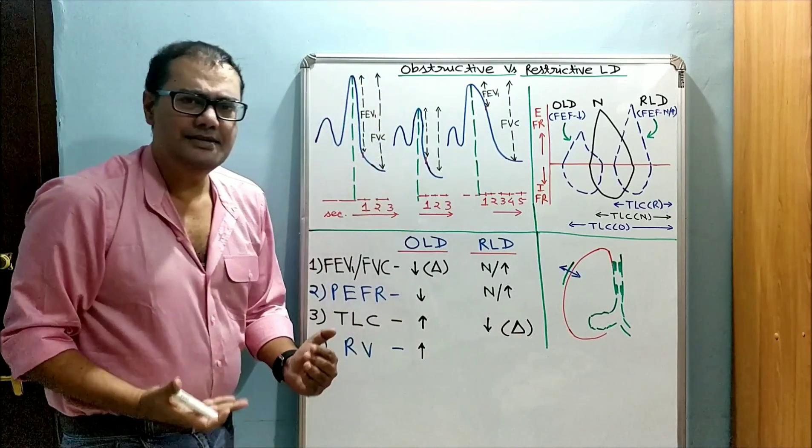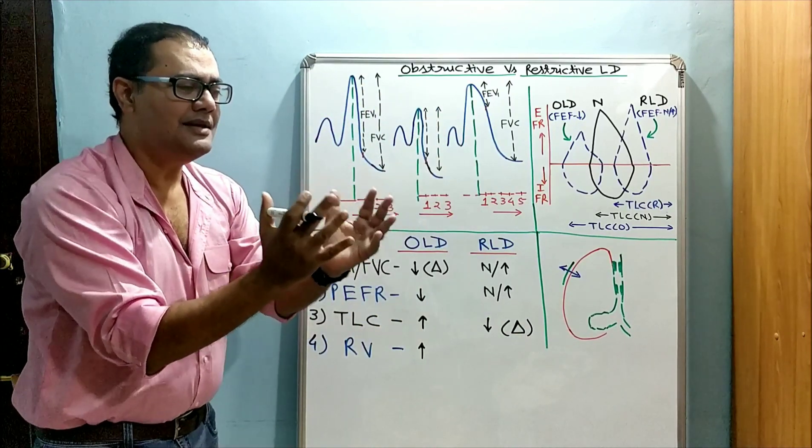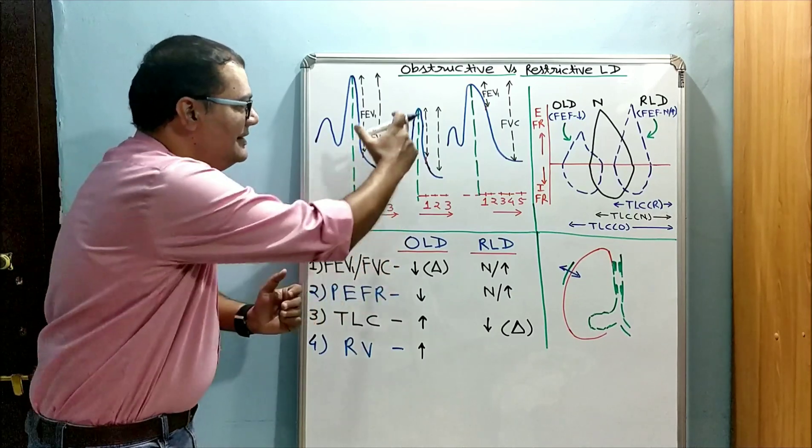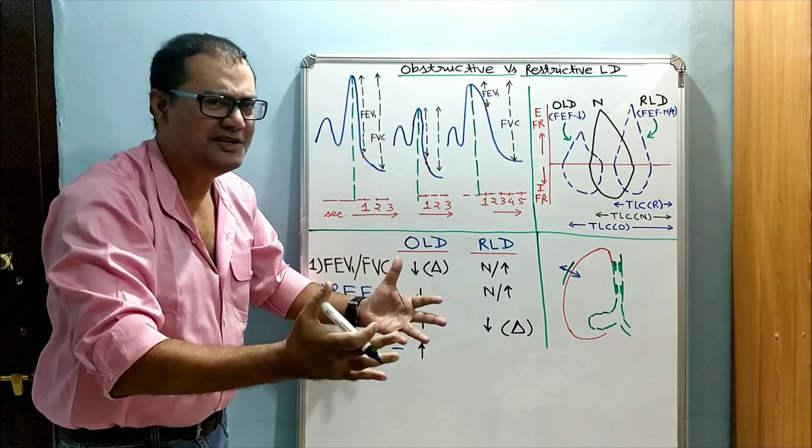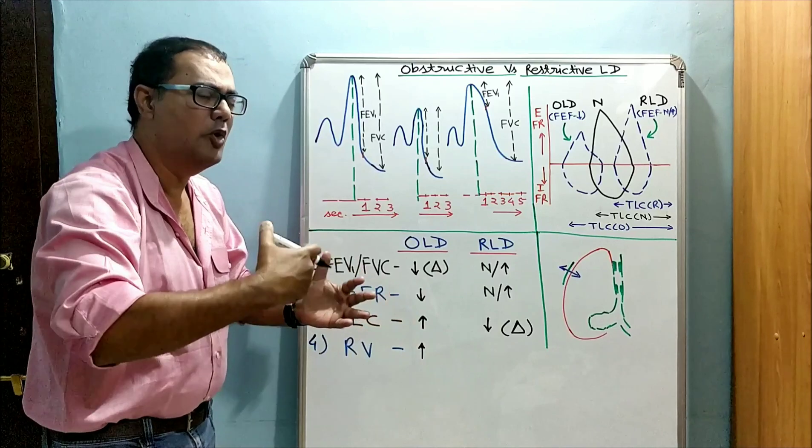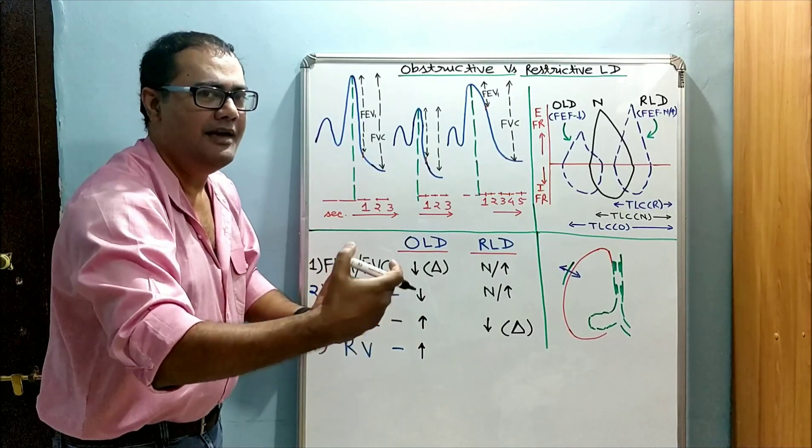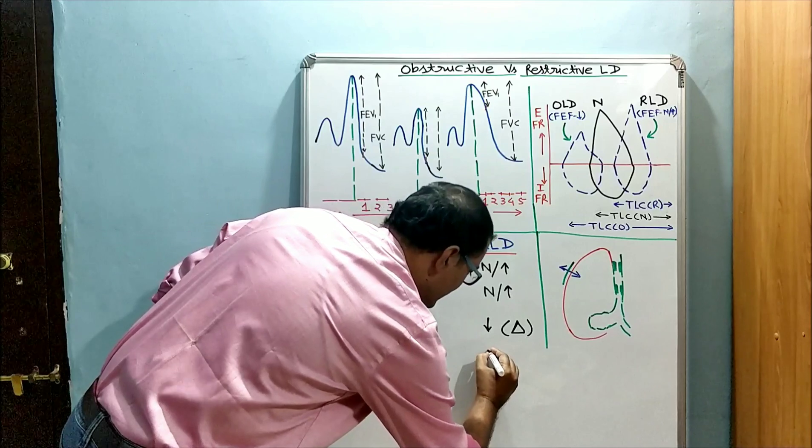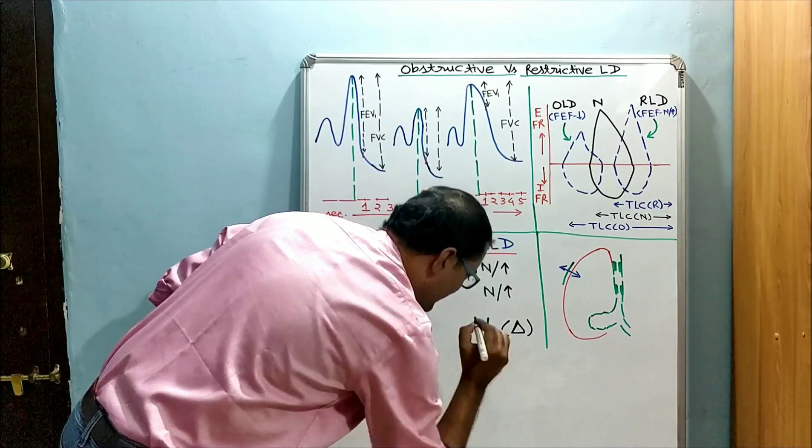In restrictive lung disease, because they are having less air to deal with and expiration is not having any problem, more fraction of it can be exhaled, and obviously residual volume can be decreased.